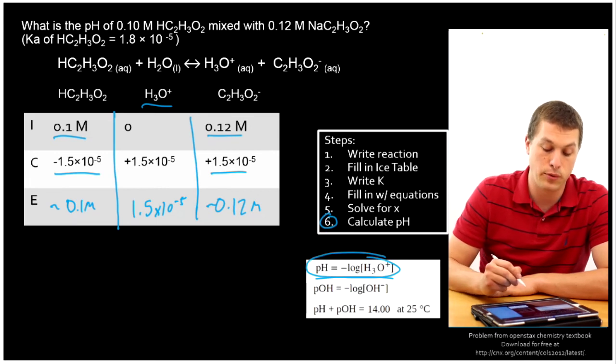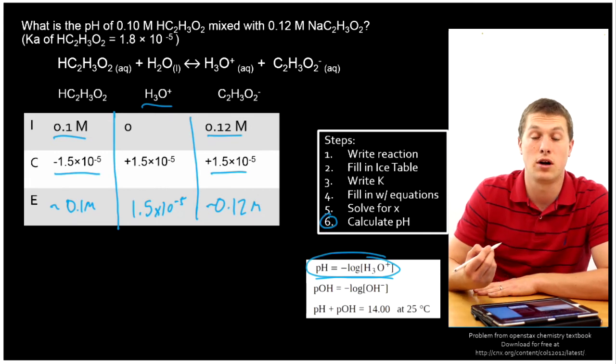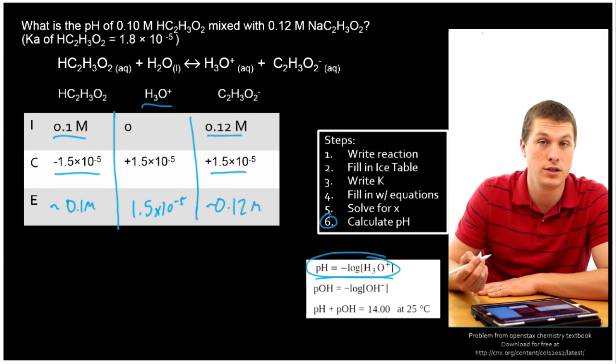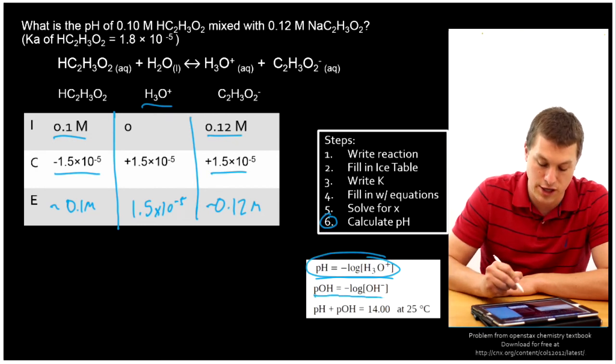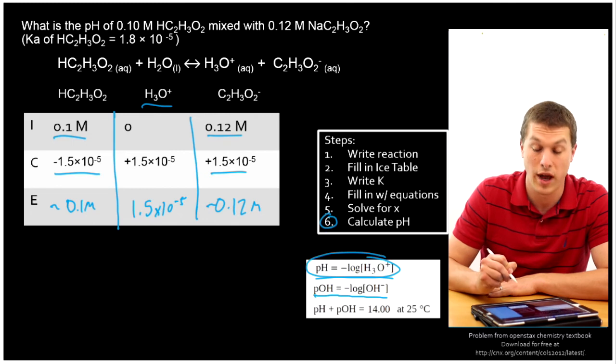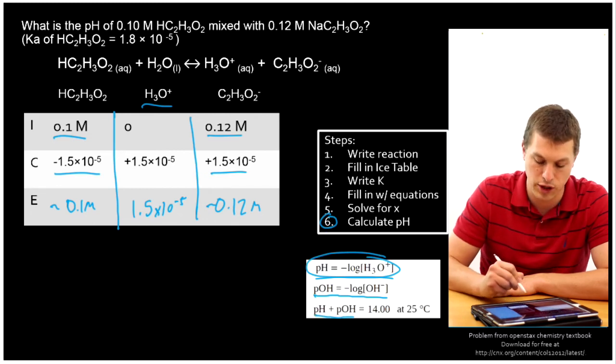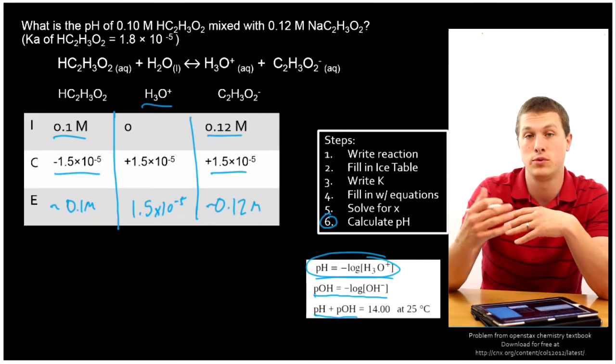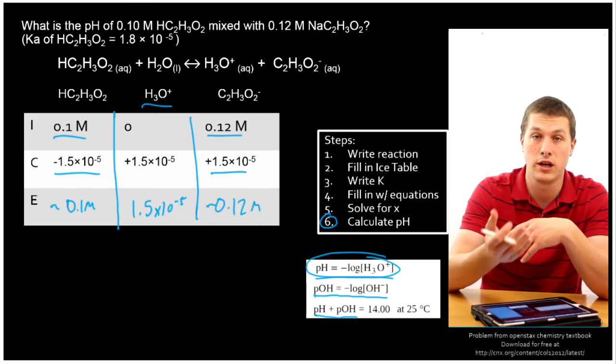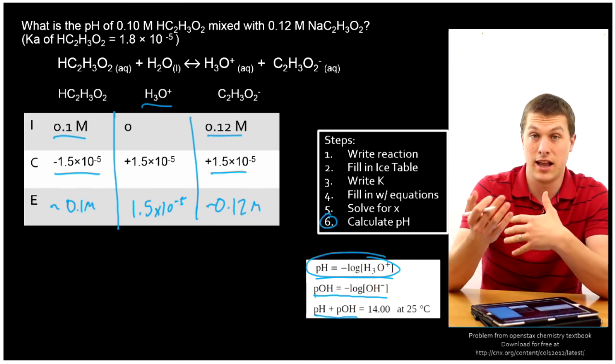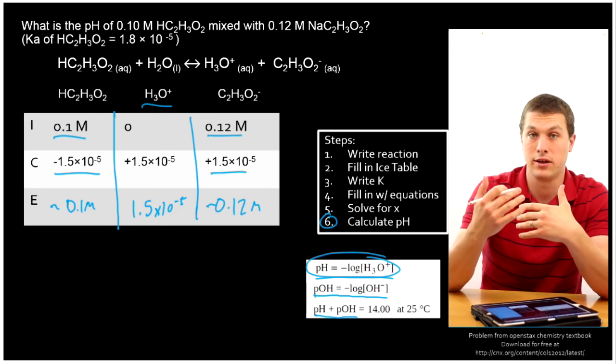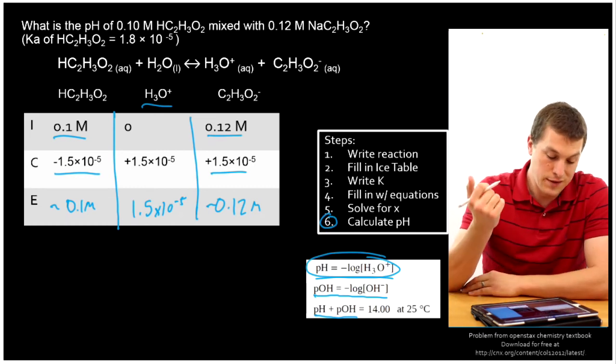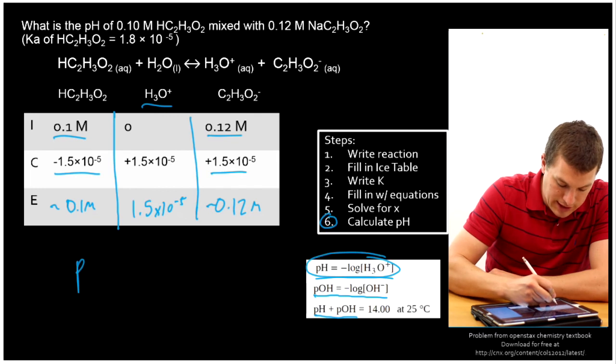Now, notice if, for example, you did this problem and you had started with a weak base in your buffer, then you would have actually been solving for hydroxide ion concentrations and you'd use pOH. And then you'd convert between pOH and pH with that expression. So this same set of procedure works whether you start with a weak acid buffer or a weak base buffer, it's just that the last step, you're going to have a little difference here where you calculate pOH instead of pH.